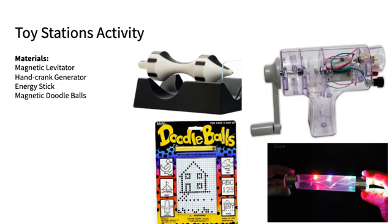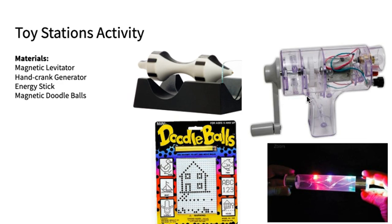For example, when students get to the magnetic levitator station, they're going to need to identify the repelling forces and the attracting forces that allow this toy to look like it's floating. When they draw their model of the hand-cranked generator, they'll talk about how the motion of their hand generates electricity and allows lights to light up, showing the transfer of energy from place to place and the transformation of energy from one type to another.